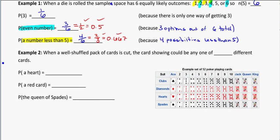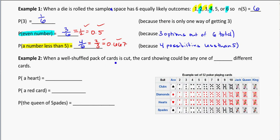So taking a look at example two, when a well-shuffled pack of cards is cut, the card showing could be any one of how many different cards do we have. In total, we have 52 cards in a deck. And I'm showing them all to you here if you need to actually pay attention to what's on a deck of cards. We have an ace, then we have a jack, king, and a queen, and a king. And we've got two to ten as numbers. You also have four suits. There's 13 of each suit. And four of each type of card. And these ones down here are considered the face cards.